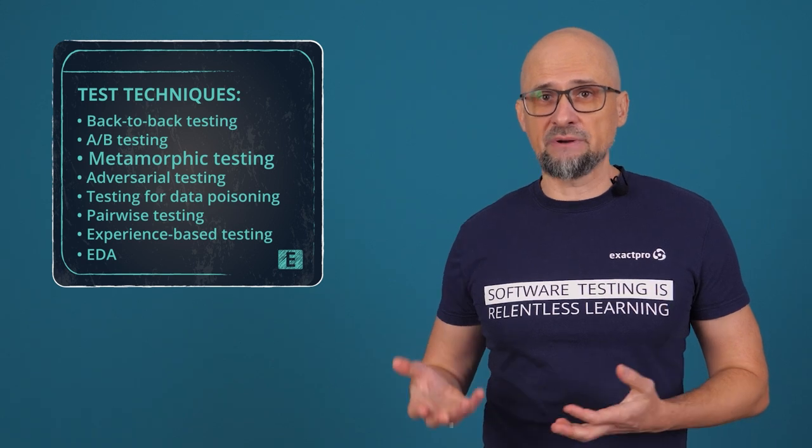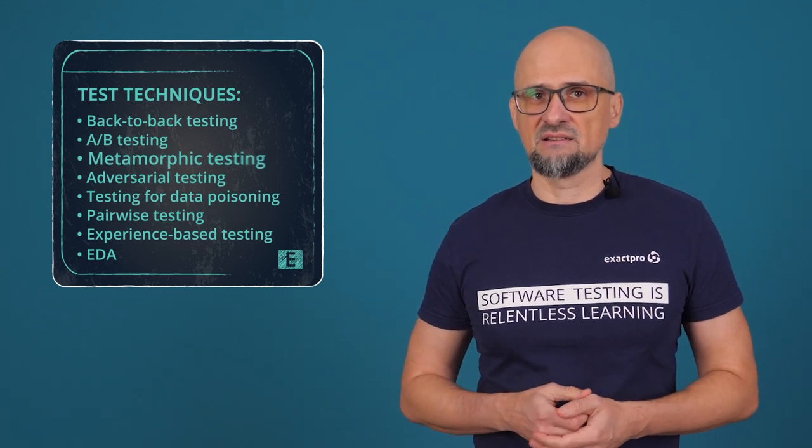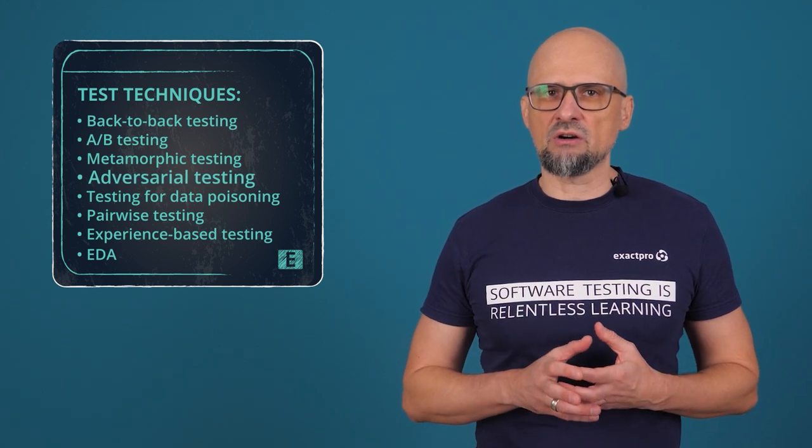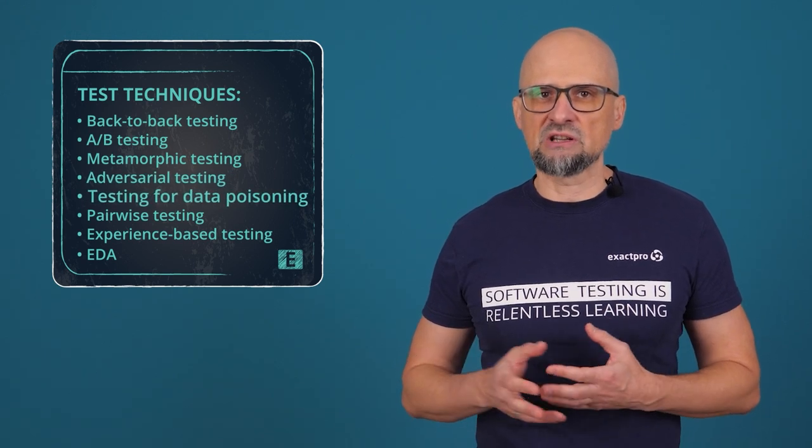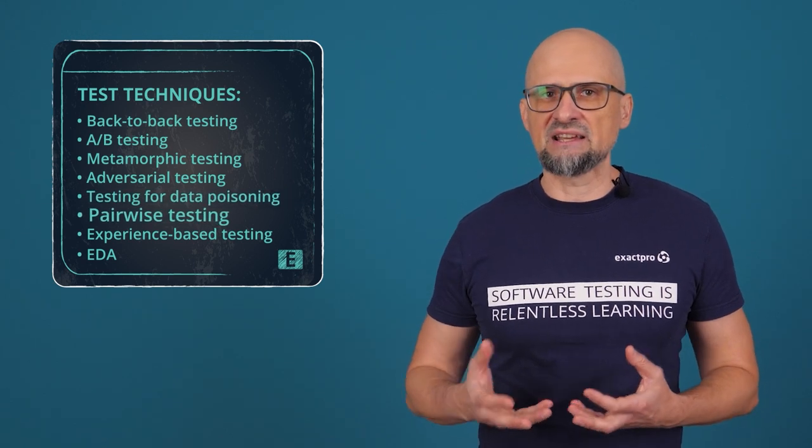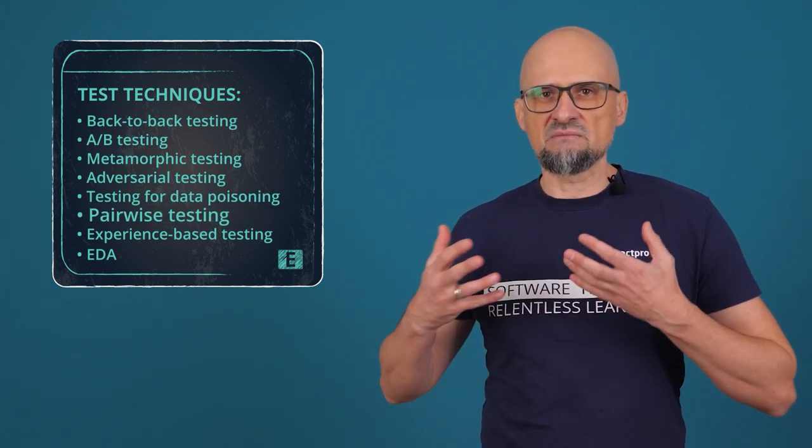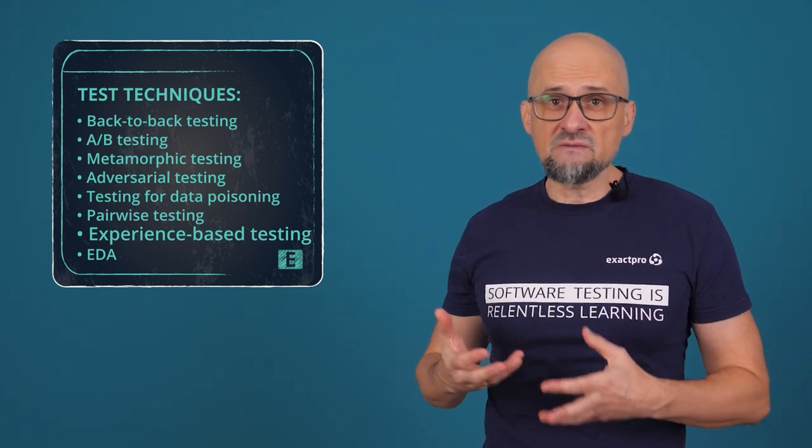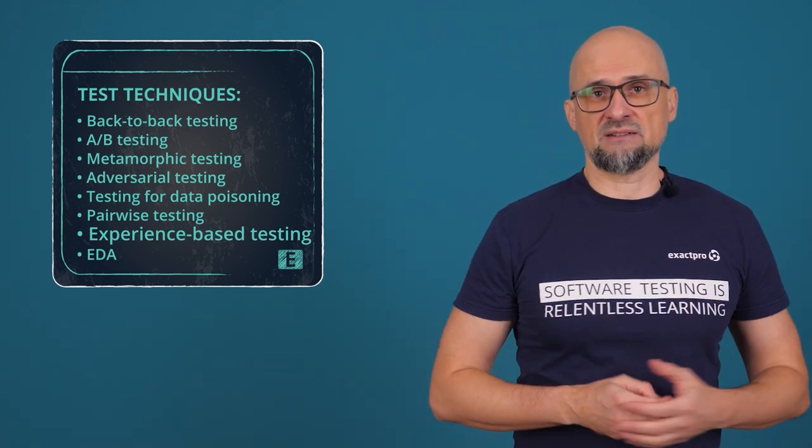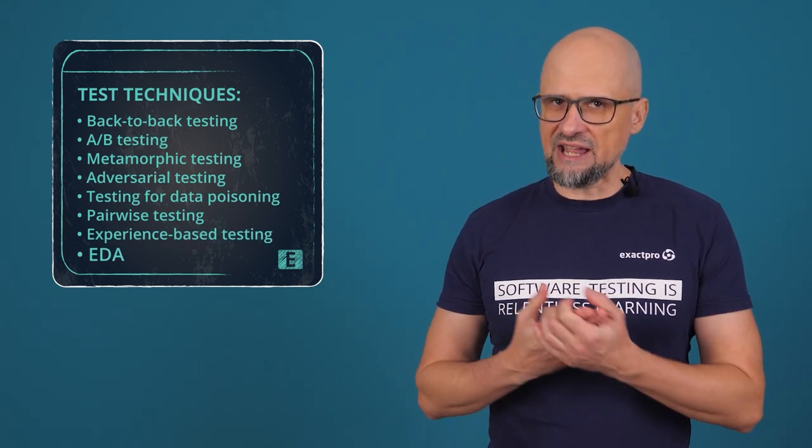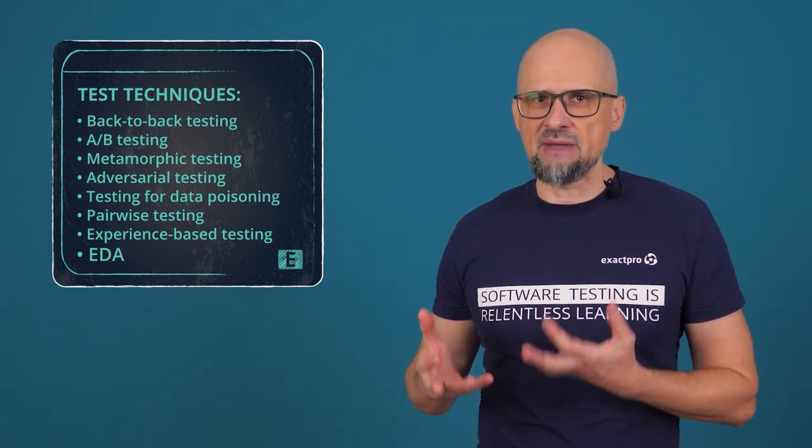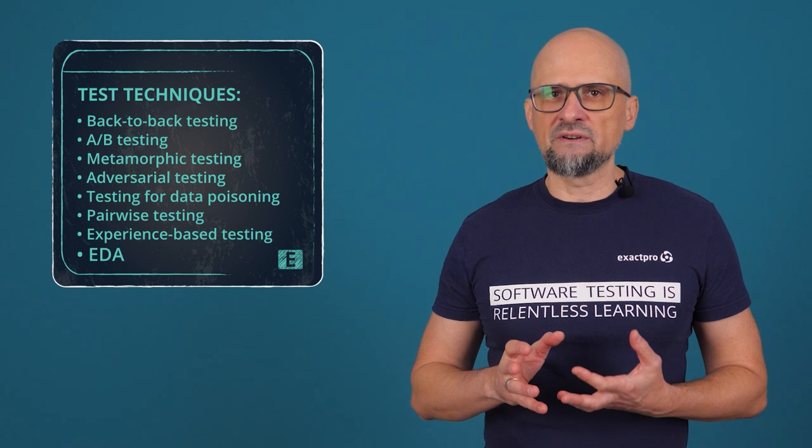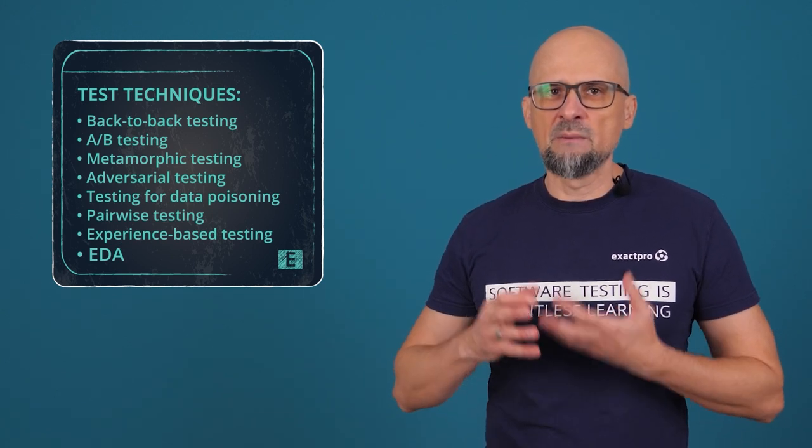Metamorphic testing can be used by inexperienced testers to cost-effectively find defects. Adversarial testing is typically appropriate for machine learning models where the mishandling of adversarial examples could have a significant impact or where the system may be attacked. Similarly, testing for data poisoning may be appropriate for machine learning systems where the system may be attacked. Pairwise testing is often appropriate for complex AI-based systems with multiple parameters. Experience-based testing is often suitable for testing AI-based systems, especially for consideration of the data used for training and operational data. Exploratory data analysis can be used to validate the machine learning algorithm, identify efficiency improvements, and leverage domain expertise. In the specific area of neural networks, coverage of the network is often suitable for mission-critical systems.